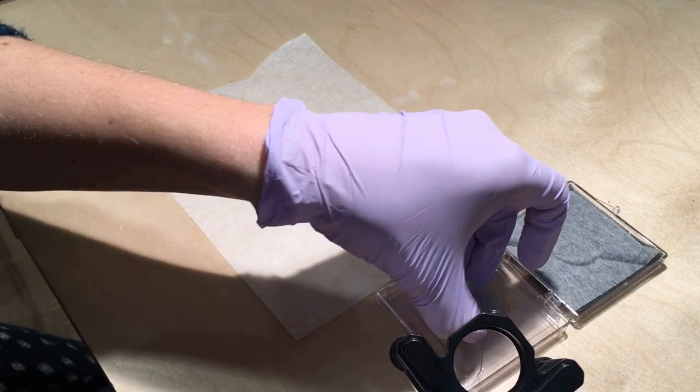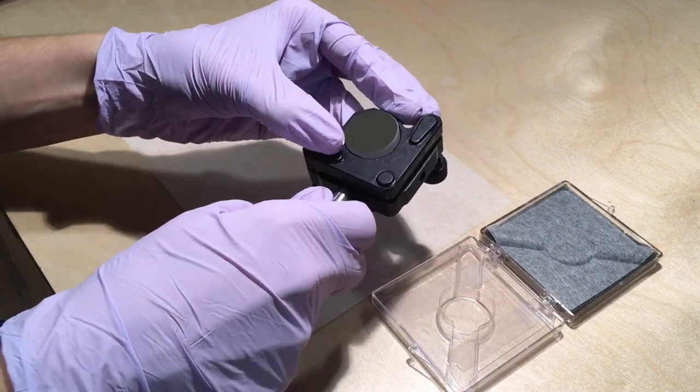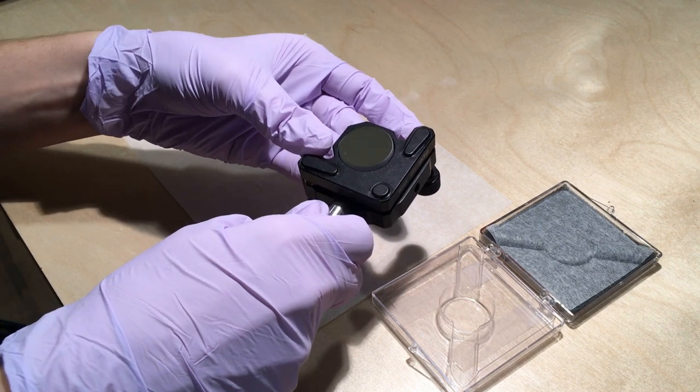We next tested an aluminum mirror also with a protective silicon dioxide overcoat. Aluminum has somewhat poorer performance in the visible than silver, but is more resistant to wear.